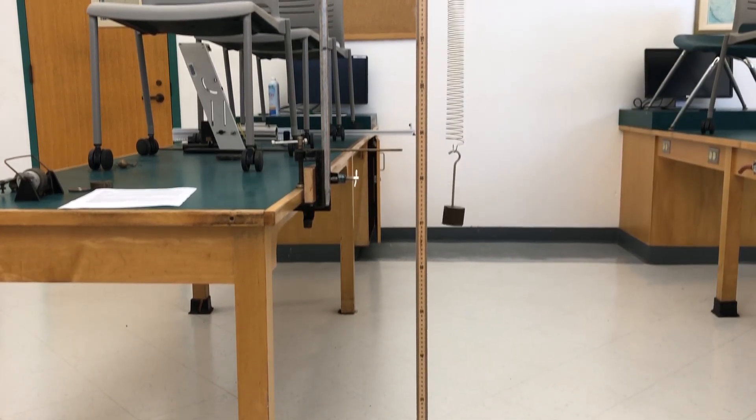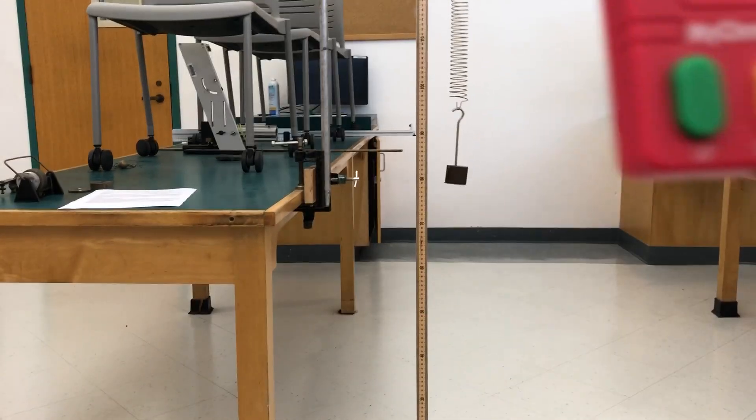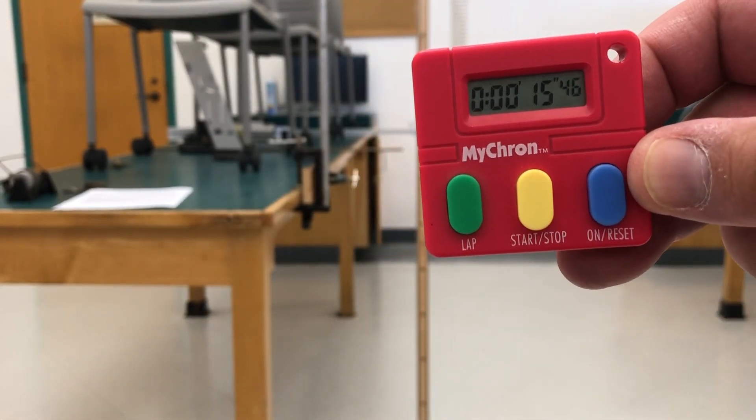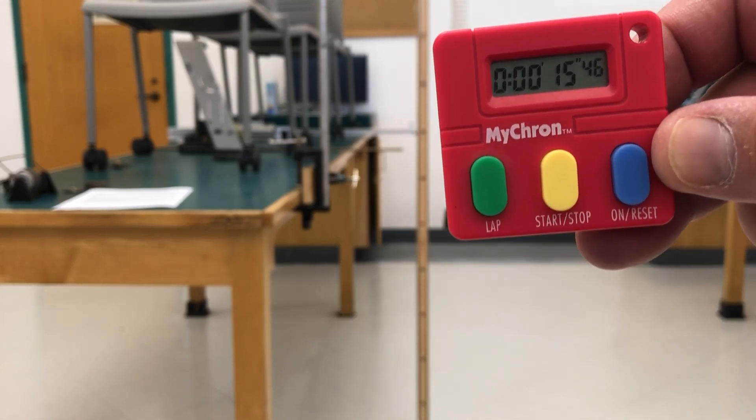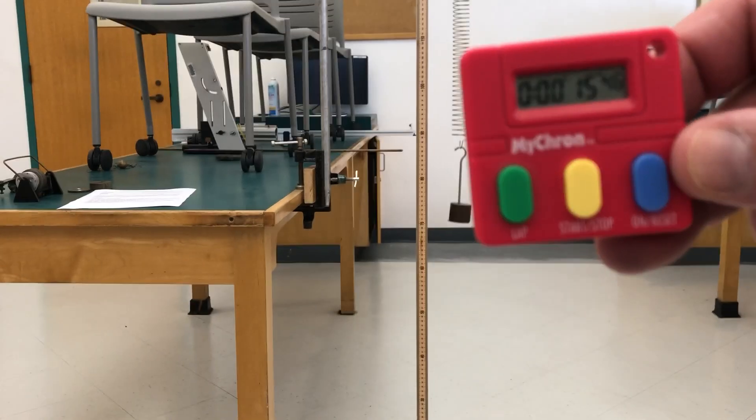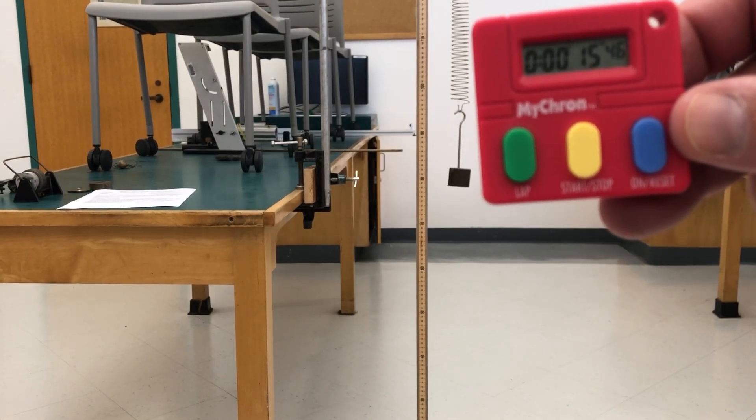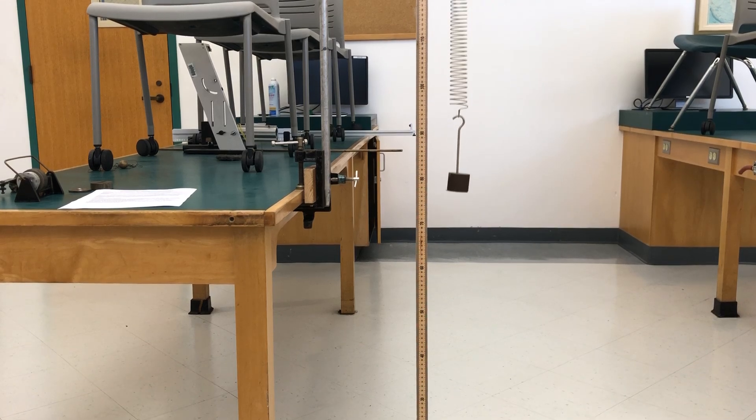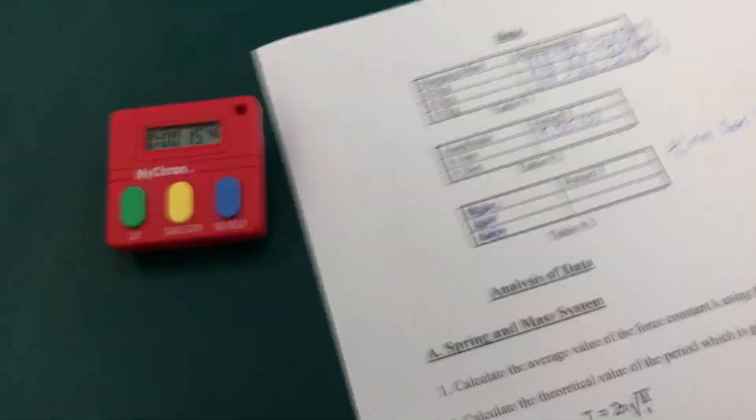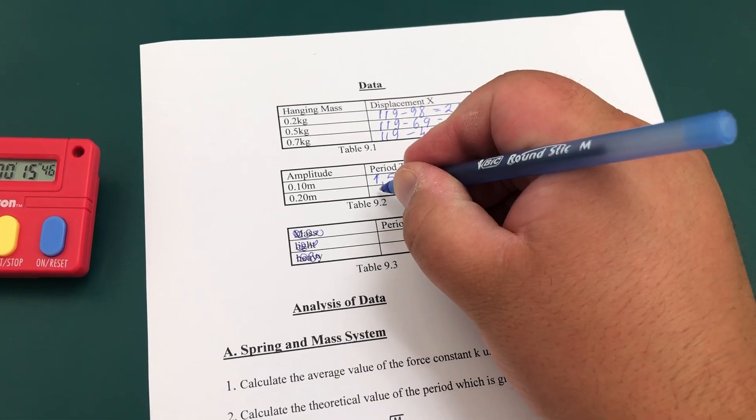Now we have a total time of 15.46 seconds. So divide that by ten oscillations, and the period comes out to be 1.54 seconds, which is different from the previous one.